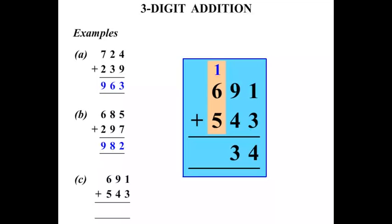1 plus 6 is 7. Plus 5 is 12. So this time we'll just write the 12 down. So our answer there, 1,234.